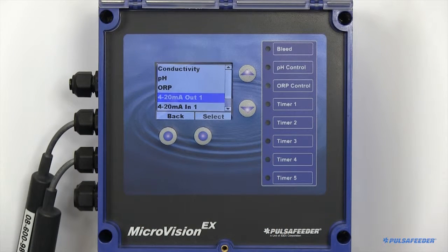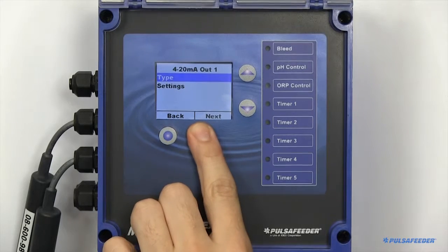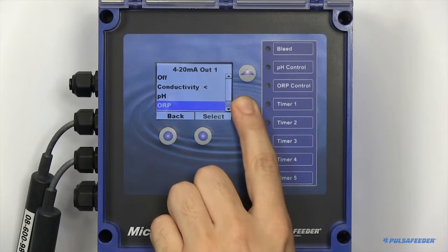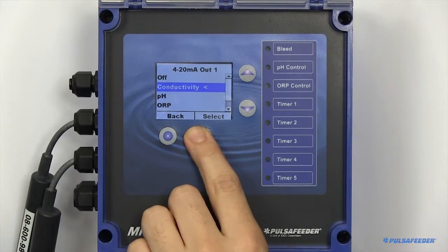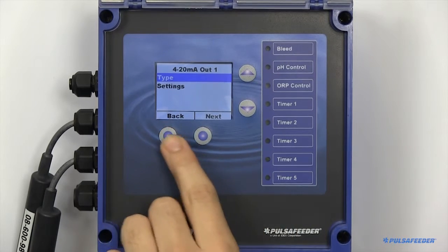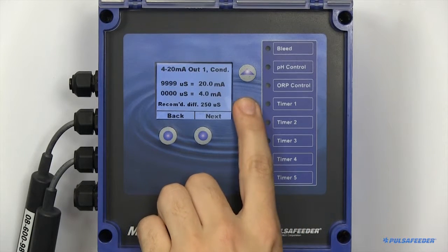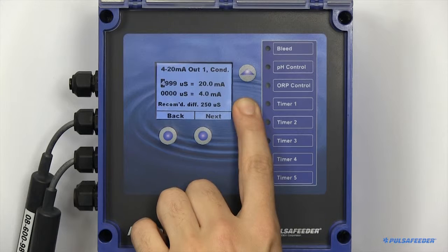To set up a 4 to 20 output board, you will first need to configure the type. After setting the type, go to the settings page. This is where you will scale the reading. Here you can tie the actual probe reading to a milliamp value.